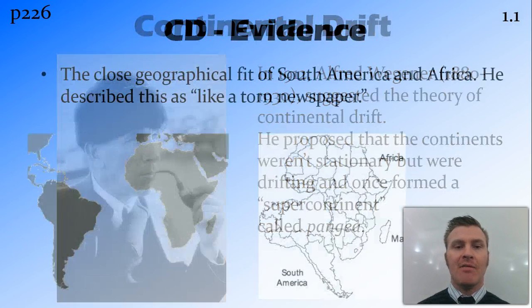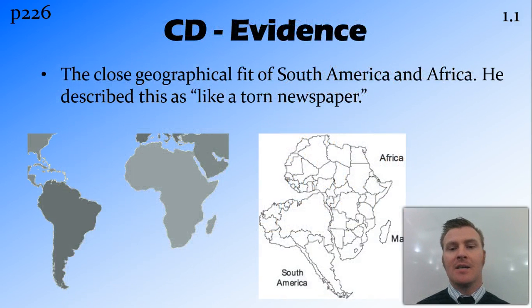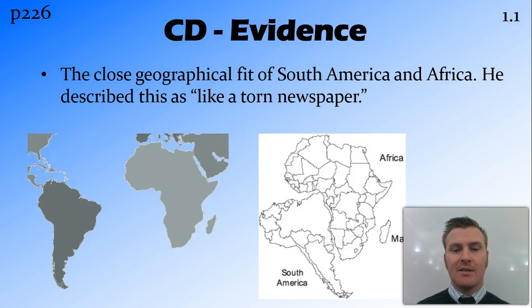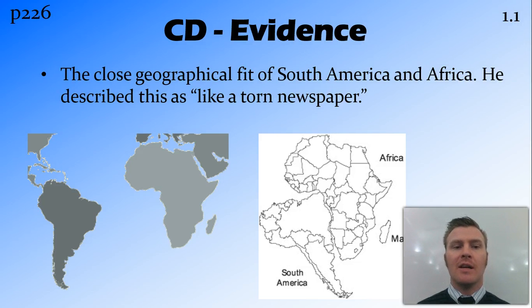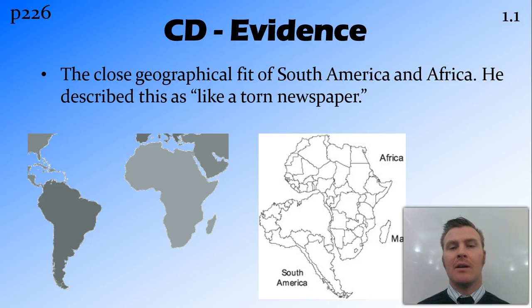Some of the evidence he had included the close geographical fit — in particular, he looked at South America and Africa. He examined the continental boundaries, or coastlines, and saw that they actually fit into each other quite well.